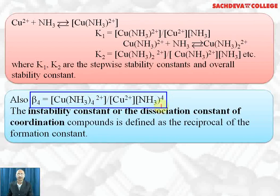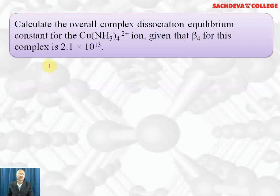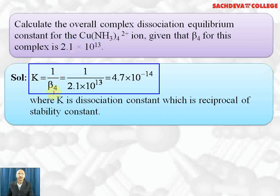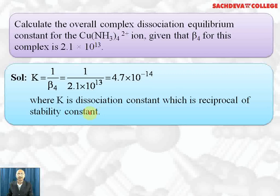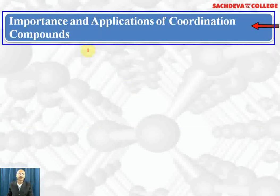The instability constant or dissociation constant of a coordination compound is defined as the reciprocal of the formation constant or stability constant. For example, calculate the overall dissociation equilibrium constant for the cupramine complex, given that the overall stability constant is 2.1 × 10¹³. The dissociation constant = 1 / (2.1 × 10¹³) = 4.4 × 10⁻¹⁴. Since the stability constant is high, the instability constant is low, and the complex is quite stable.